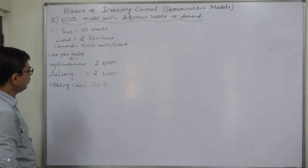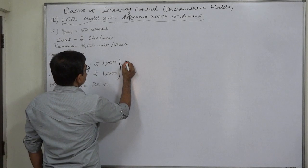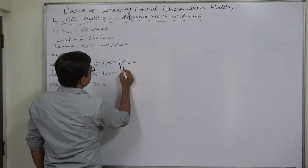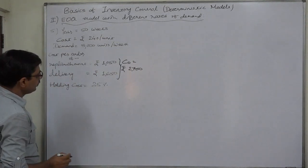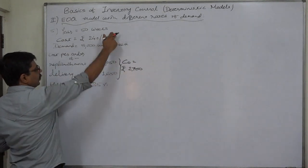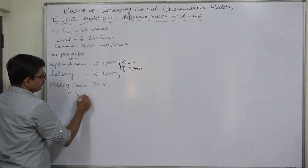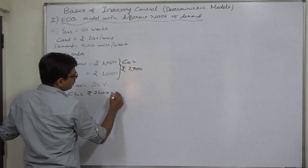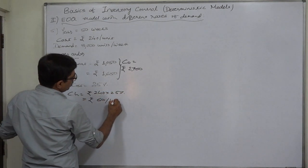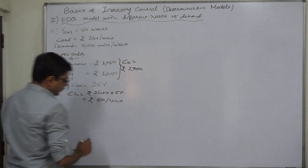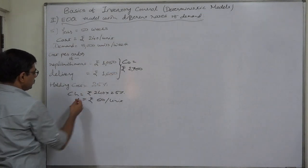So ultimately the CO comes to rupees 2,700 per order. Holding cost is 25 percent of cost, so CH will be rupees 240 into 25 percent, that means rupees 60 per unit per annum or per year.